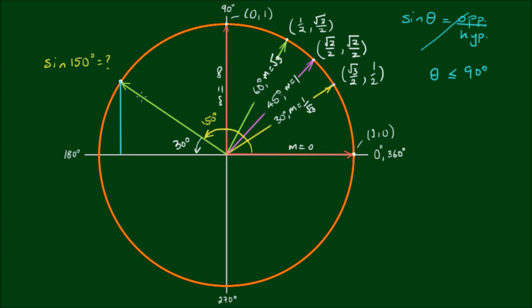We see that this ray is 30 degrees up from the horizontal. So if it's 30 degrees from the horizontal, then this vertical distance is equal to 1 half. So we can say that the sin of 150 is equal to the sin of 30 degrees, which is equal to 1 half.